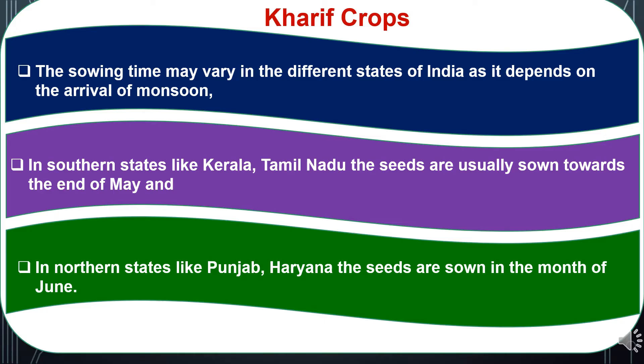Regarding Kharif crops, the rainfall pattern decides their cultivation. The sowing time may vary across different states of India as it depends on the arrival of the monsoon. In southern states like Kerala and Tamil Nadu, seeds are generally sown towards the end of May, while in northern states like Punjab and Haryana, seeds are sown in the month of June. So the rainfall arrival pattern decides the sowing season for different states in Kharif season.